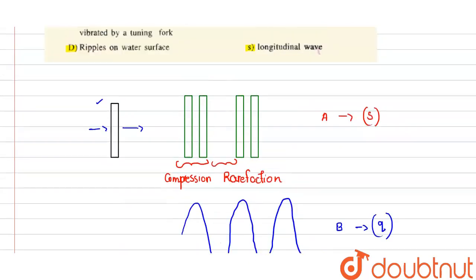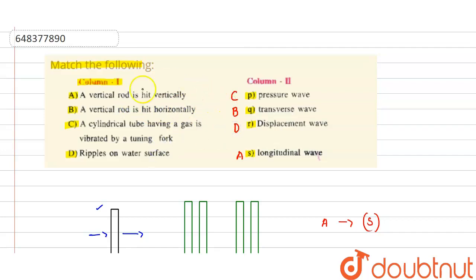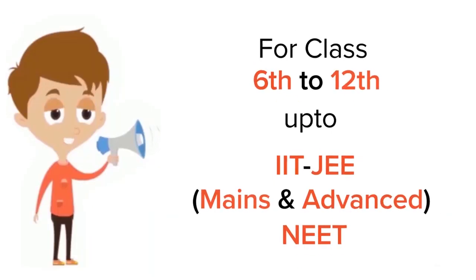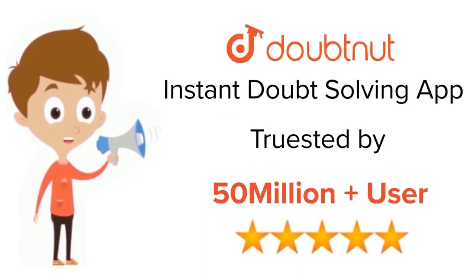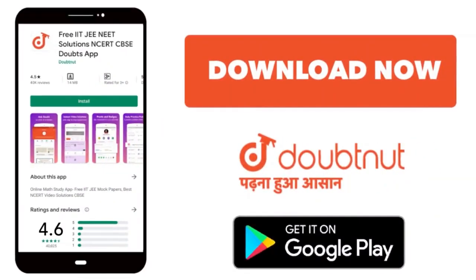So, to summarize: when a vertical rod is hit vertically, option A corresponds to S (longitudinal wave); B corresponds to Q (transverse wave); C corresponds to P (pressure wave); and D corresponds to R (displacement wave). Thank you. For Class 6 to 12, IIT JEE and NEET level — trusted by more than 5 crore students. Download the DoubtNet app today.